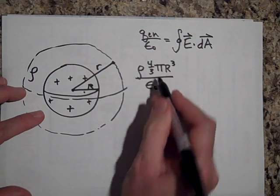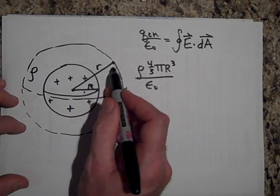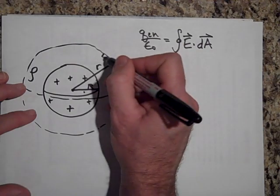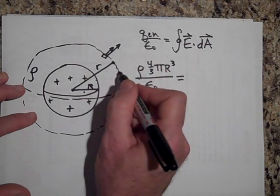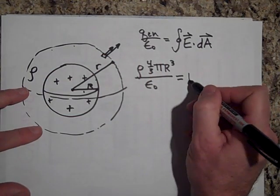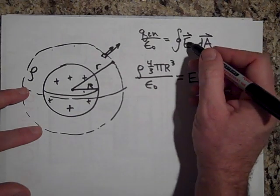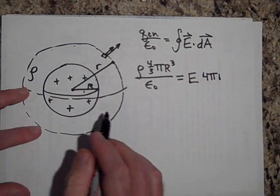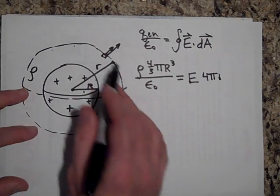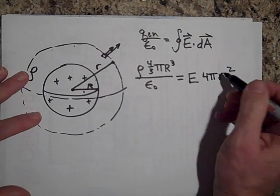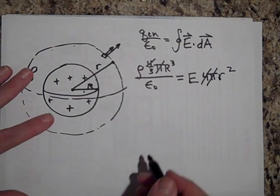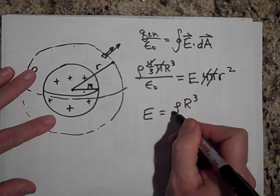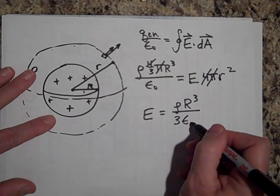On the left-hand side, we again remove the dot product since E is parallel to dA, and E is the same at every point on the Gaussian surface by symmetry. Pulling E out and summing the dA's gives the surface area four pi little r squared — it's little r because that's the radius of the Gaussian surface. Cancelling pi and four from both sides and solving for E gives: E equals rho R cubed over three epsilon-naught r squared.